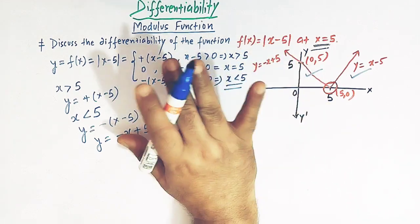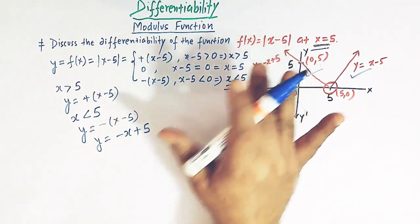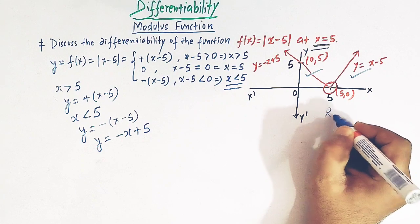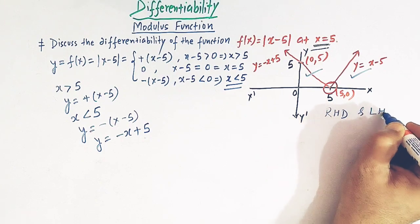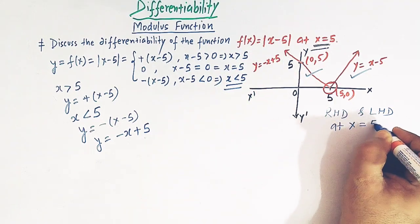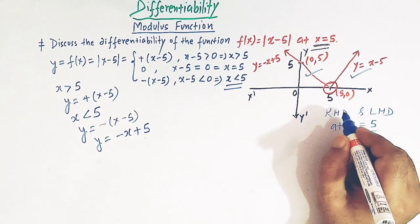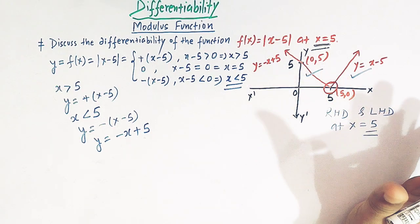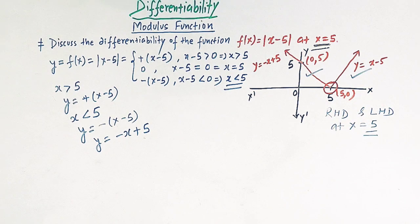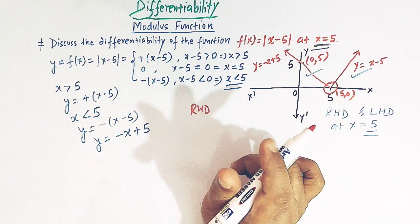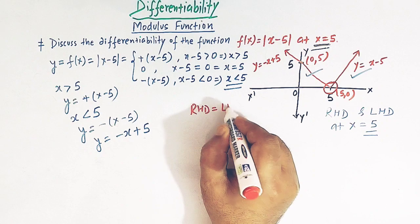Now to prove the differentiability of this function — whether this mod function is differentiable or not differentiable at x = 5 — we will find the right hand derivative and the left hand derivative at x = 5, and check whether both derivatives are equal or not.